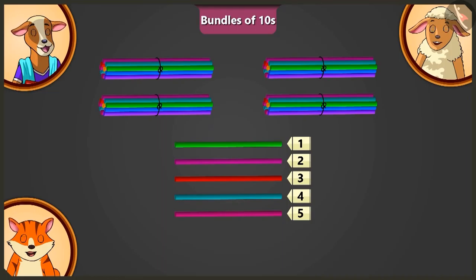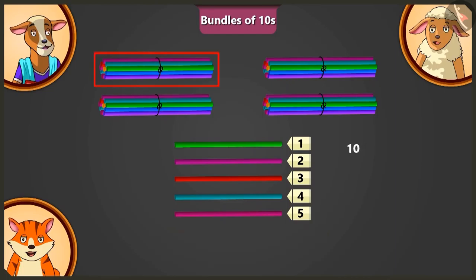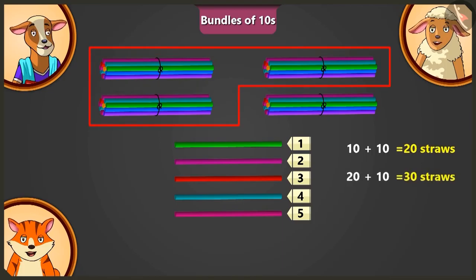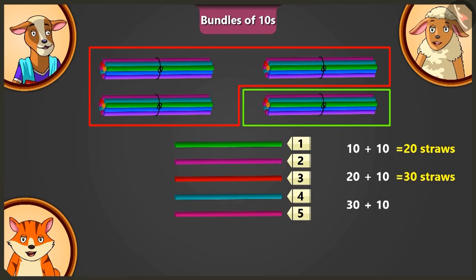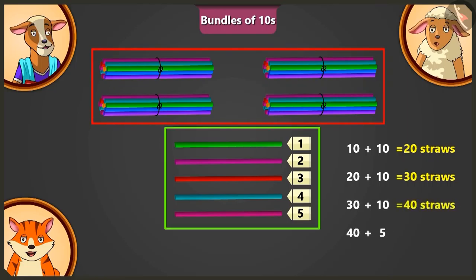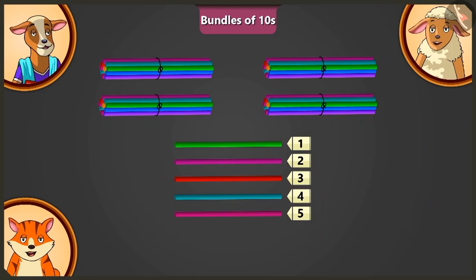Very good, Lily! Now, tell me, how many straws are there in total? Adding 10 and 10, 20. Adding 10 to 20, 30. Adding 10 to 30, 40. Adding 5 to 40. So, there are 45 straws in total. Oh, wow! These are all the straws I need.